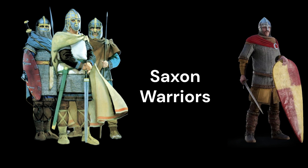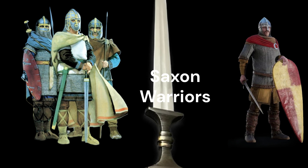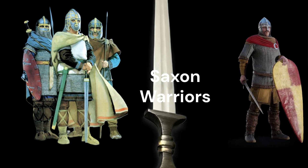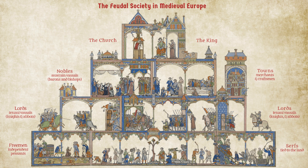Saxon warriors and nobles wore tunics with belts, cloaks fastened by brooches, and distinctive leather shoes. Weaponry reflected the martial traditions of Germanic tribes. The Saxons were known for their saxes, single-edged blades used in both combat and daily tasks, alongside swords, spears, and shields. With the growing influence of feudalism, knights in the region began to adopt chain mail, helmets, and more sophisticated weaponry, echoing broader European trends.